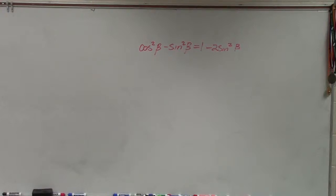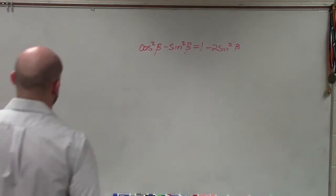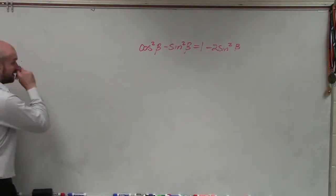So what I'm going to do is work on the left side and use my Pythagorean identity to rewrite cosine.